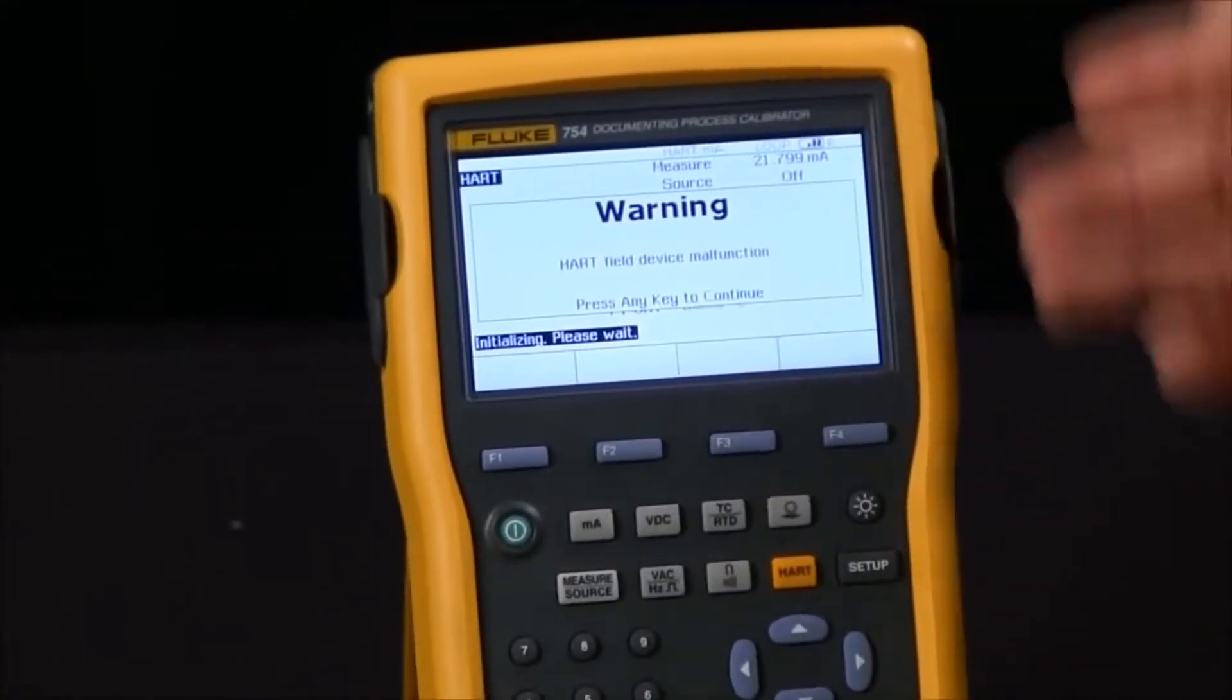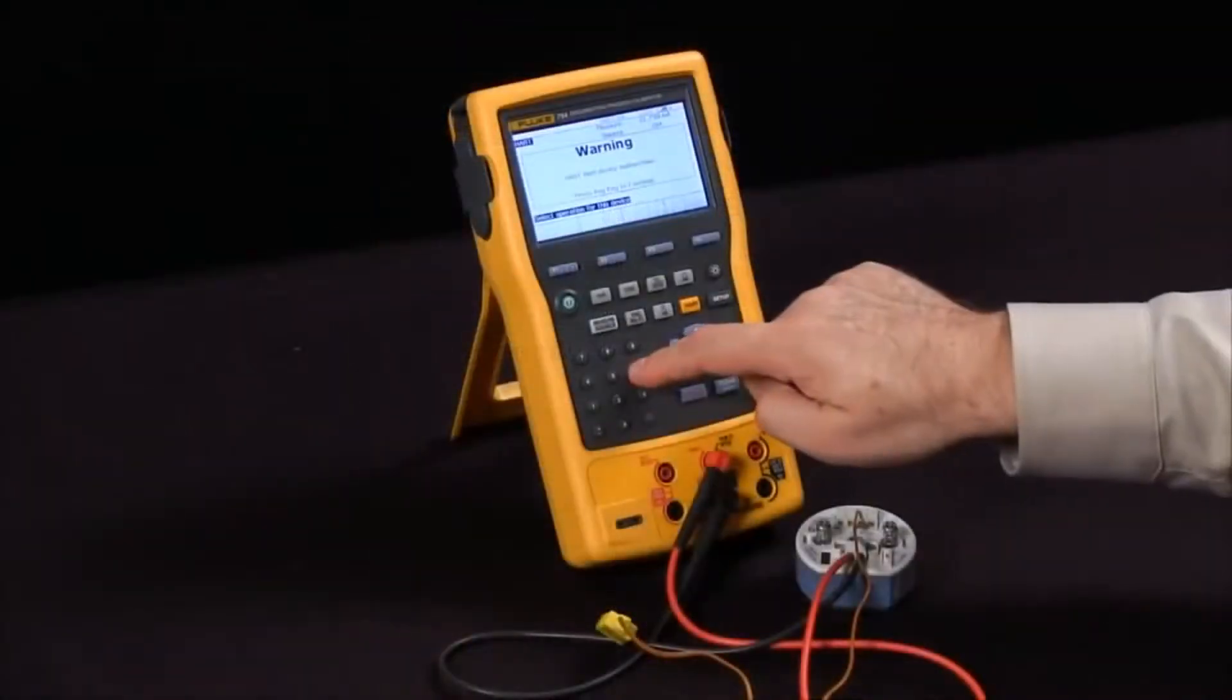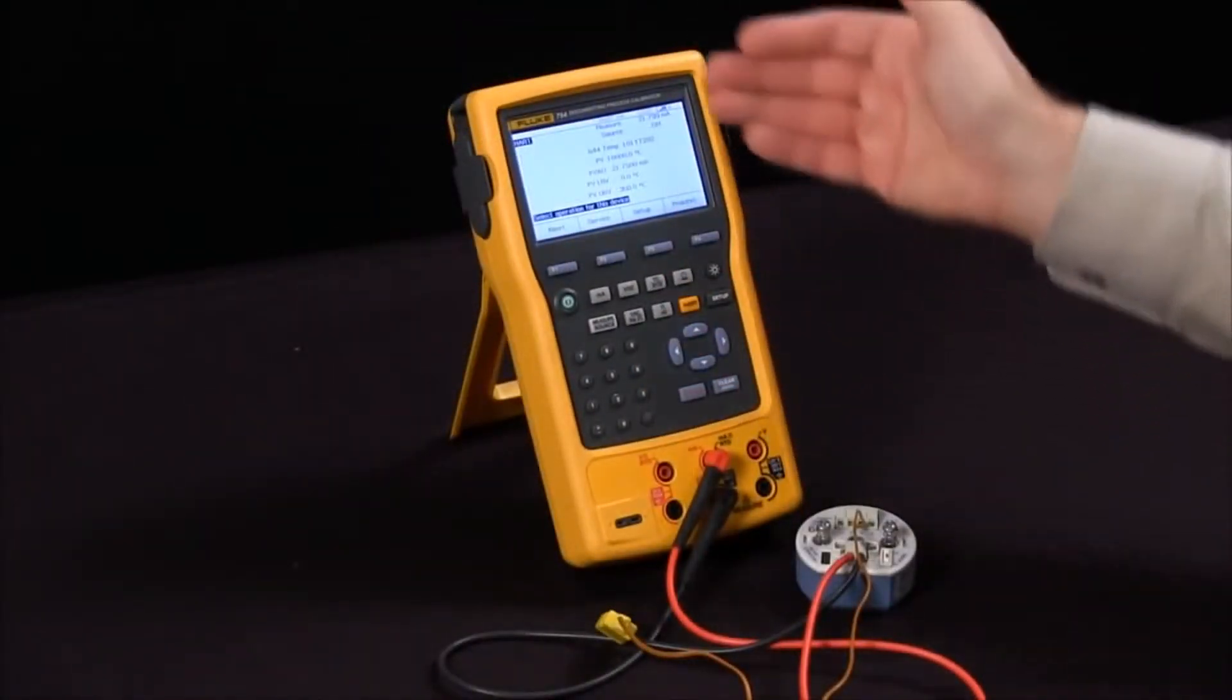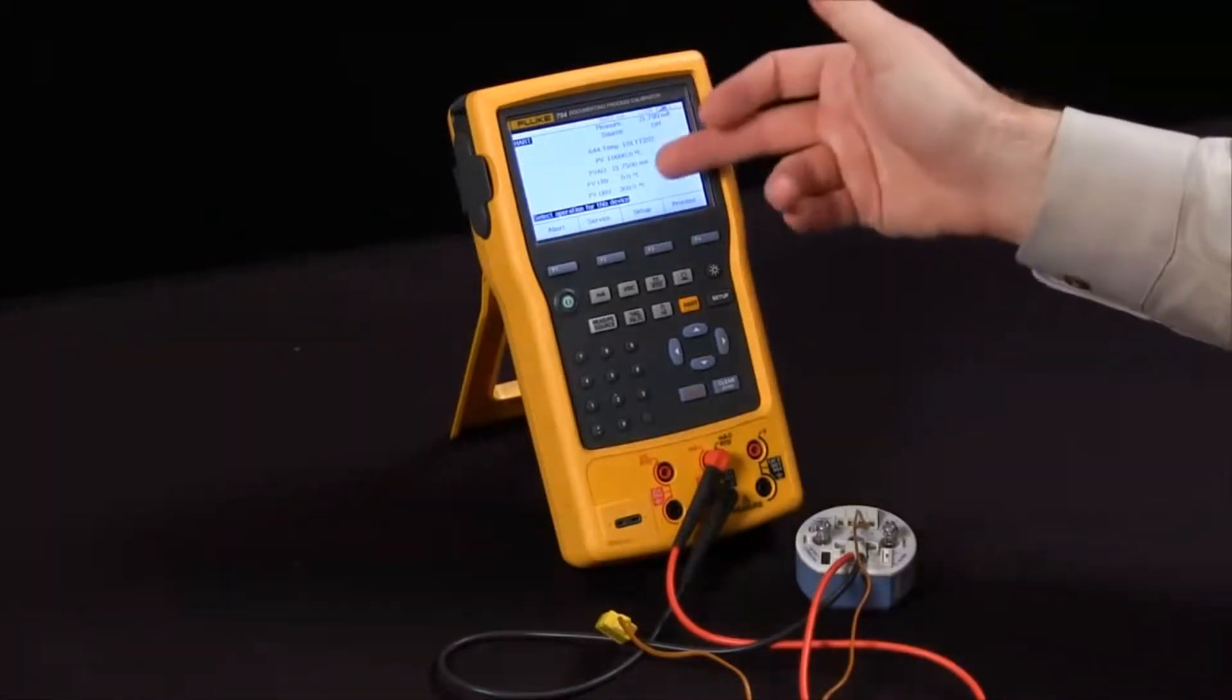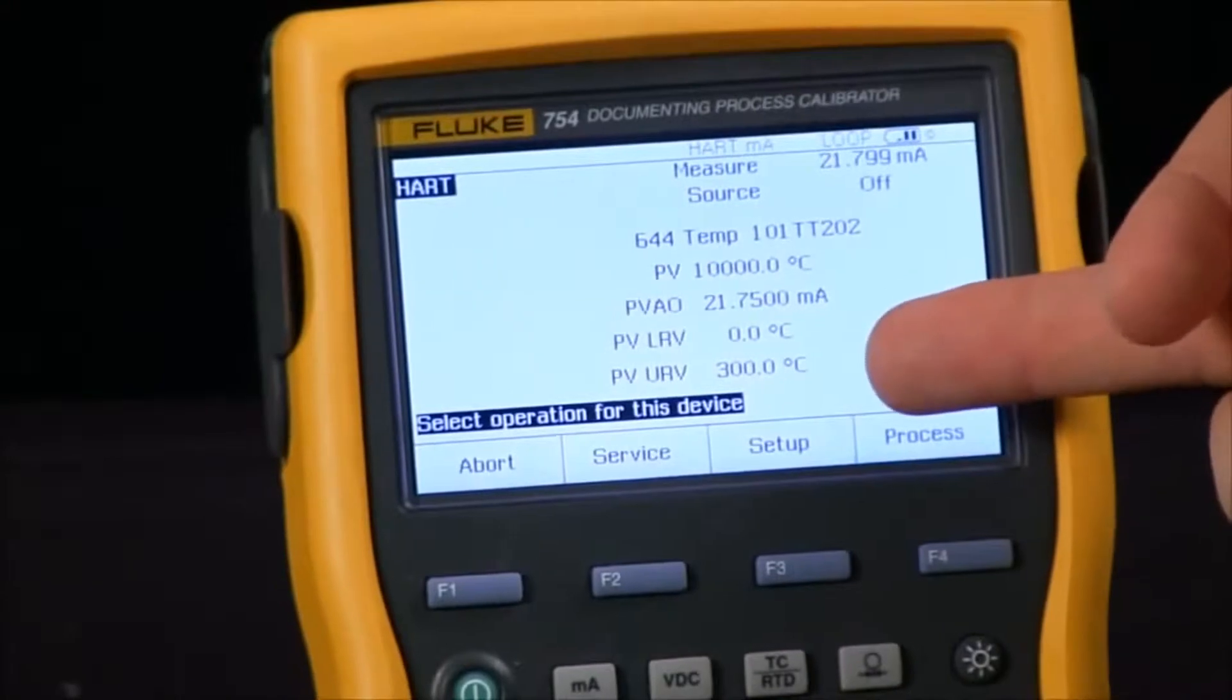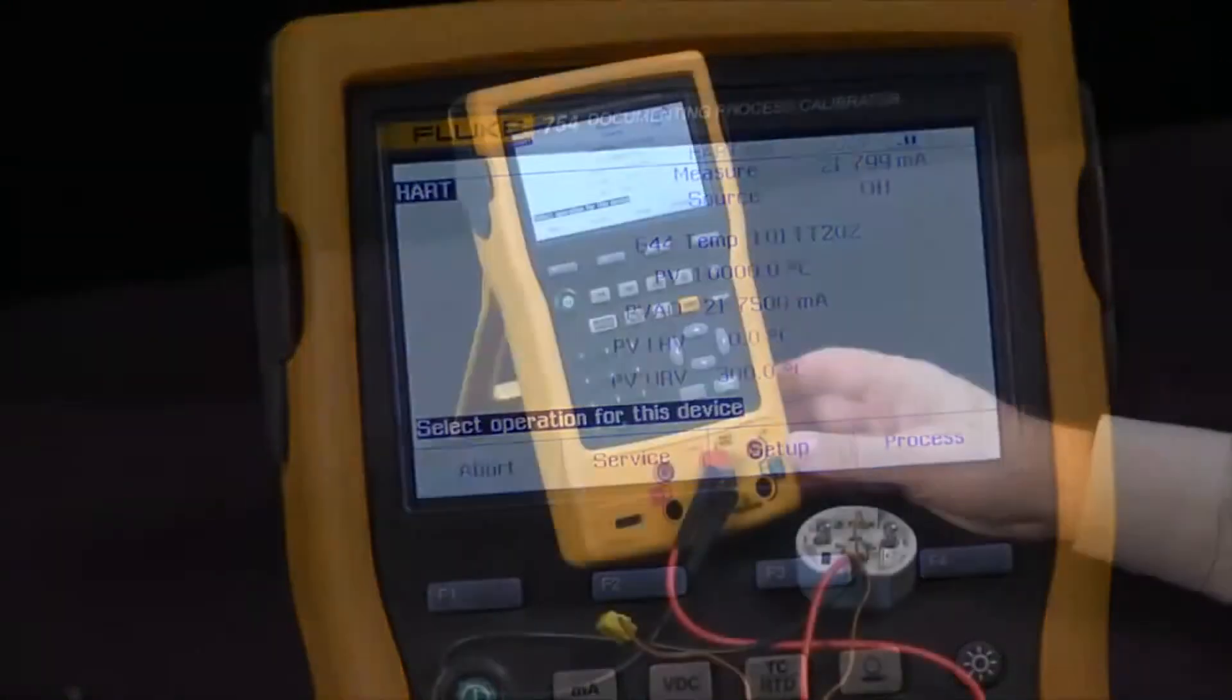It will give me all of the parameters of the device. It is also letting me know that it is in failure mode right now because we are not sending any signal to it. So we see that as a temperature transmitter my lower range value is zero degrees C and my upper range value is 300 degrees C.